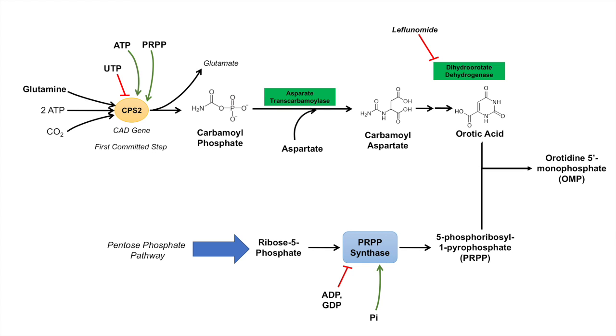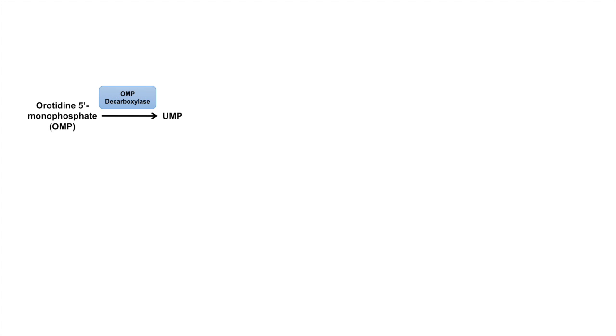Once you have OMP, it actually gets converted to UMP by the enzyme OMP decarboxylase. This enzyme is also inhibited by UMP and CMP, so it's a negative feedback regulation on this enzyme. Then UMP is converted to UDP, and then UDP is actually converted to deoxy-UDP, or dUDP, by ribonucleotide reductase.